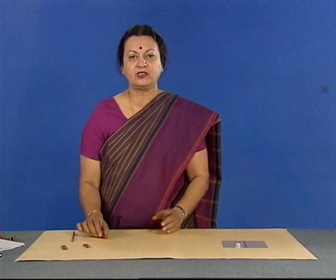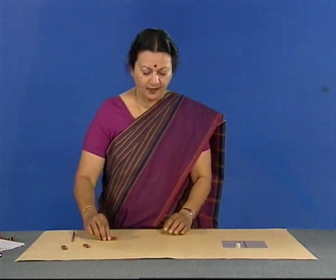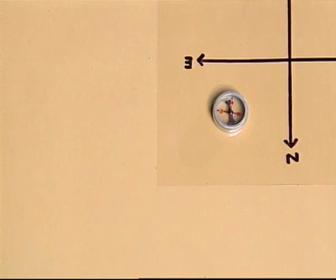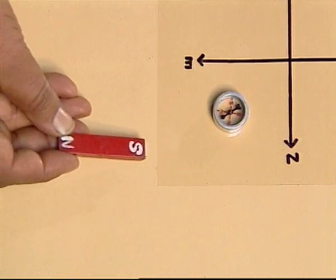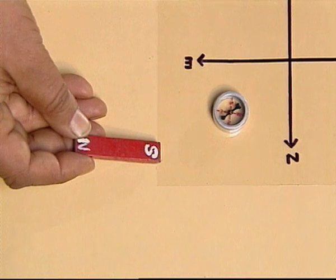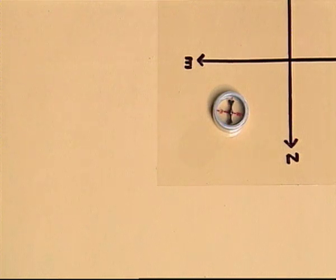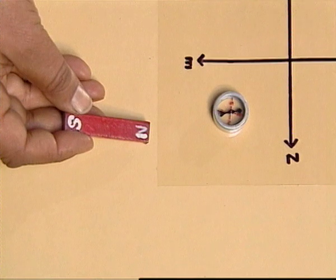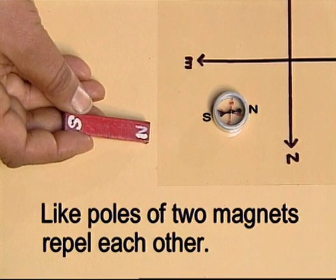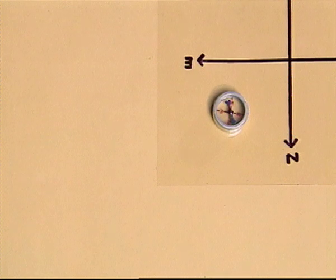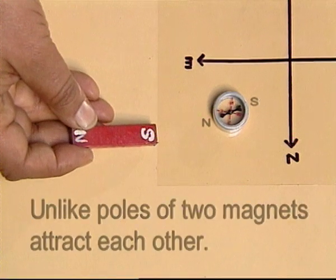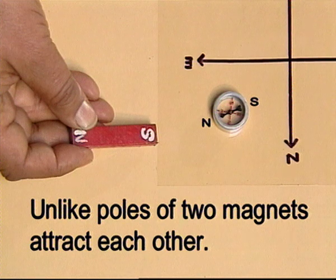What would happen if we bring a magnet close to this compass needle? The needle gets deflected. Now if we bring the other pole of the magnet close by, the needle gets deflected in the opposite direction. When we bring the north pole of the magnet near the tip, the tip moves away because like poles of two magnets repel each other. When we bring the south pole of the magnet near the tip, the tip moves closer because unlike poles of two magnets attract each other.